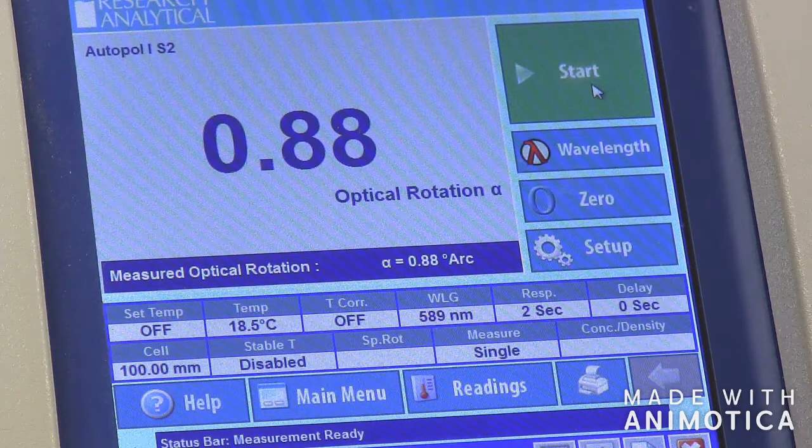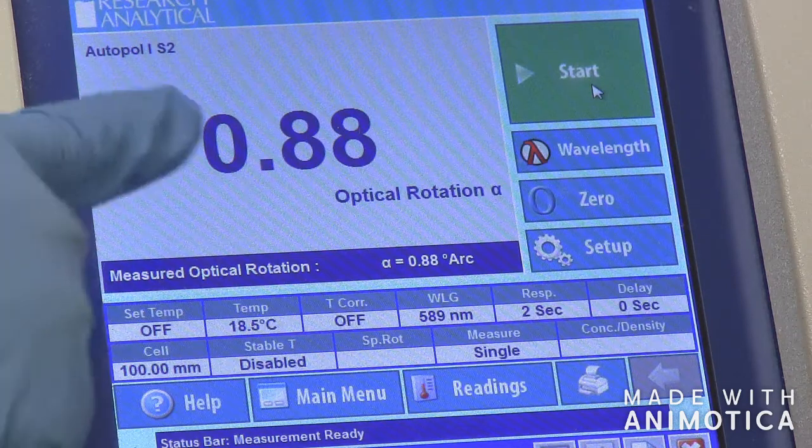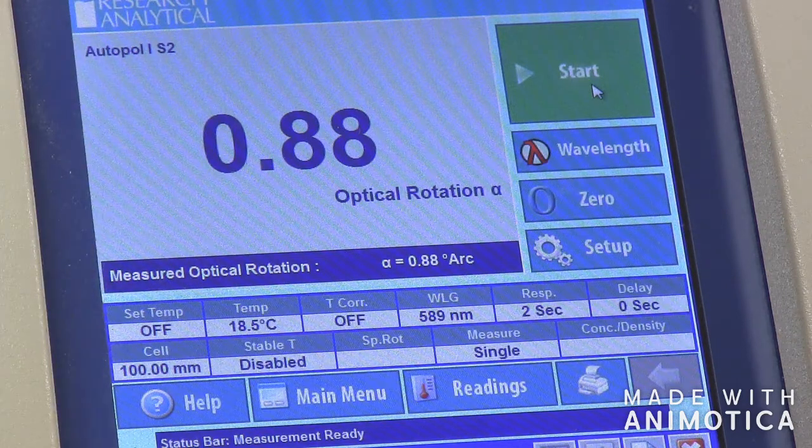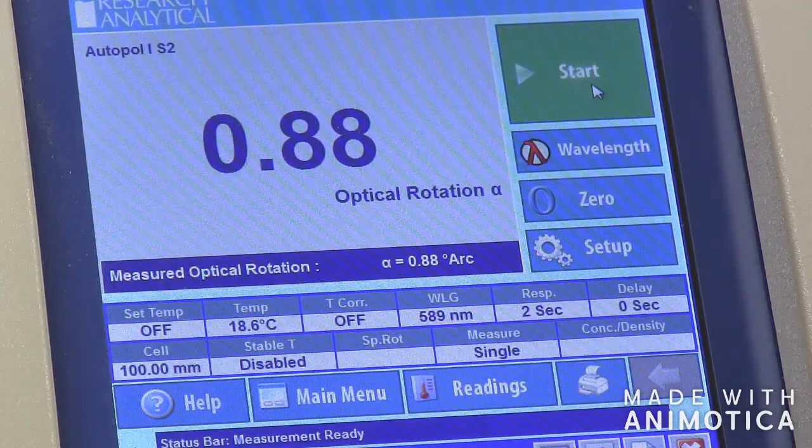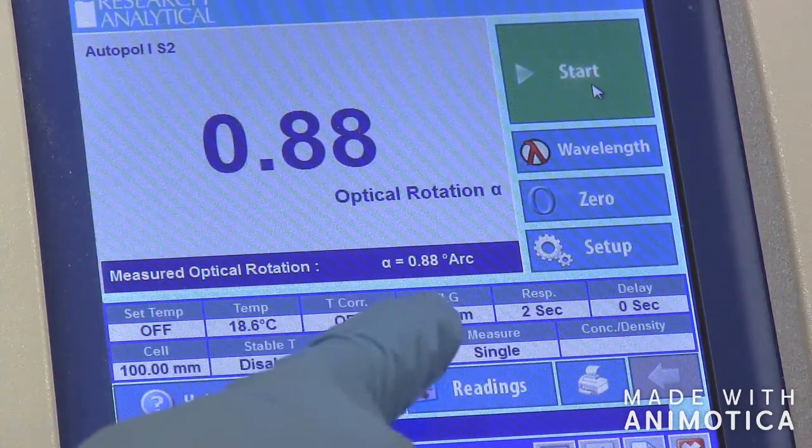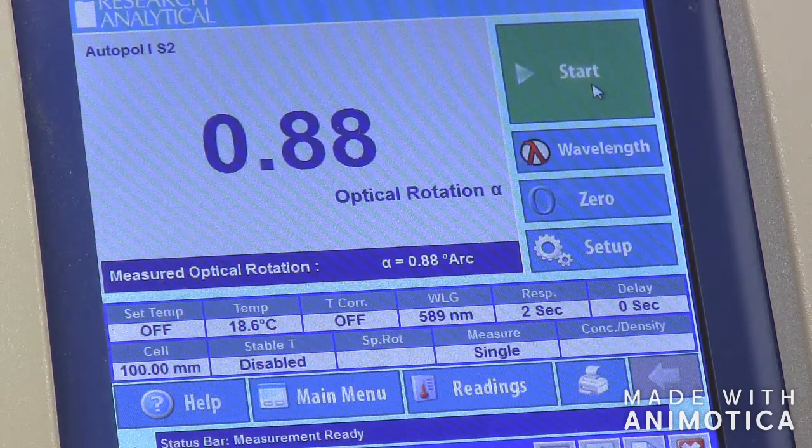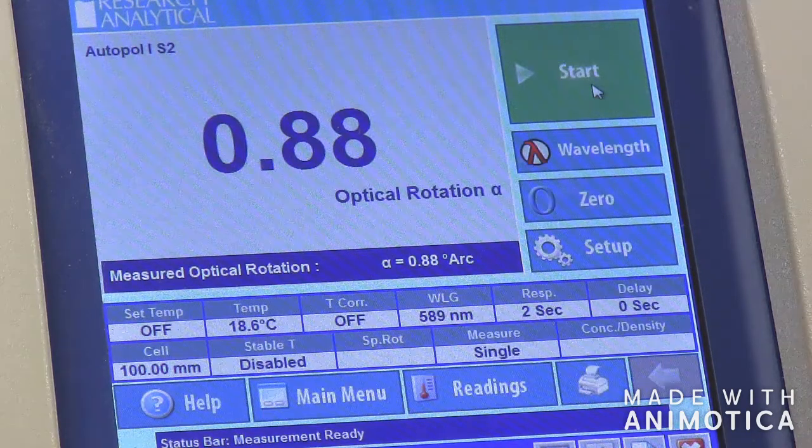You will want to record the observed rotation, temperature, and wavelength displayed on the screen. With this information, you will calculate the specific rotation of your sample.